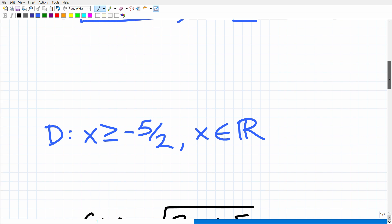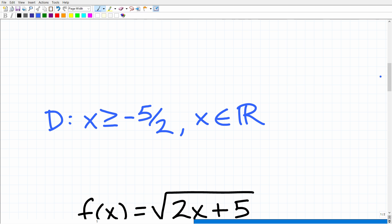So the domain of this function could be expressed in different ways. But basically, it's all x's that are greater than or equal to negative five over two, where x is an element of the real number system. Okay, so this is only one way you can express the domain. But there are other ways using interval notations and graphs. But basically, they're all equivalent.